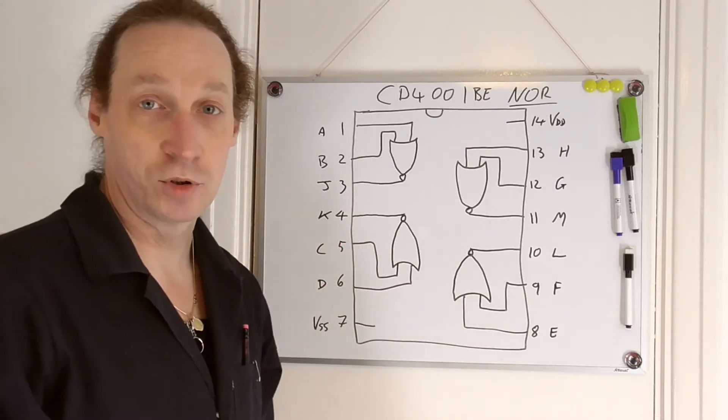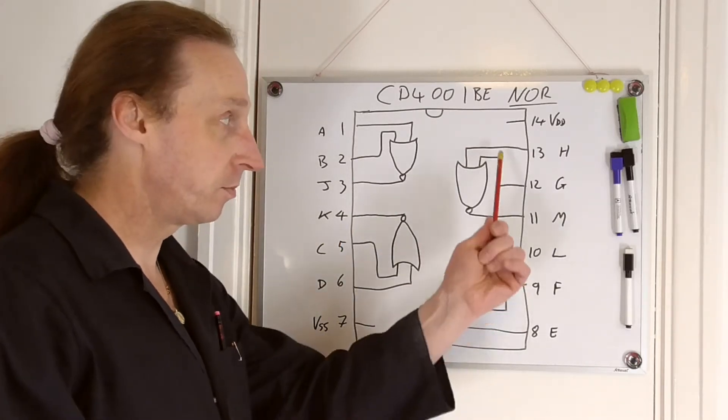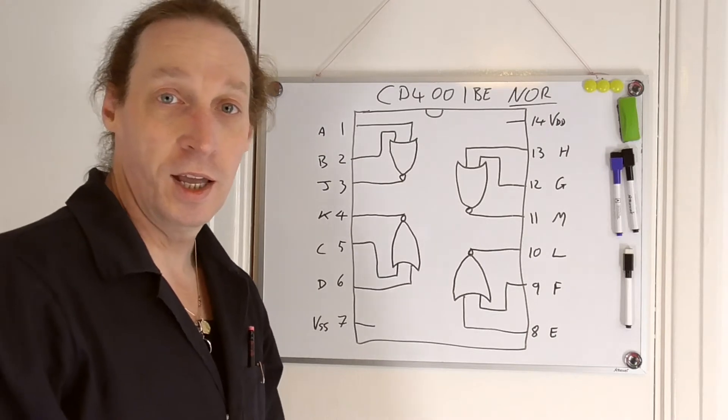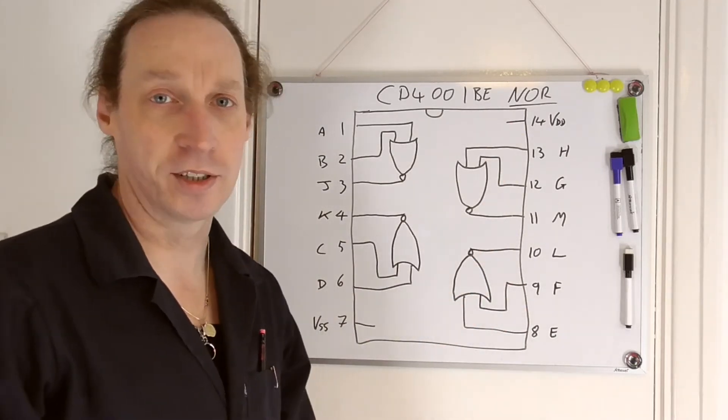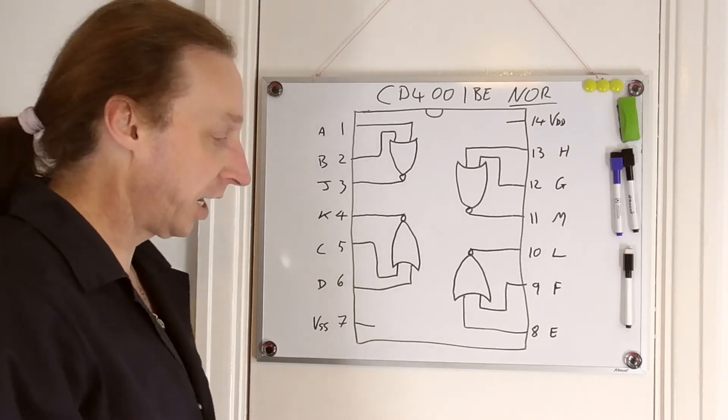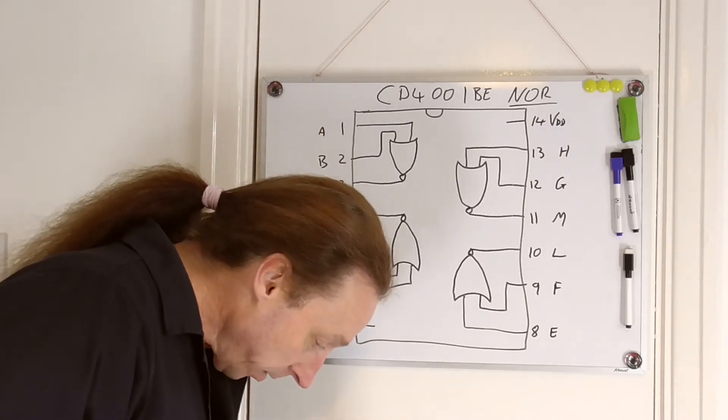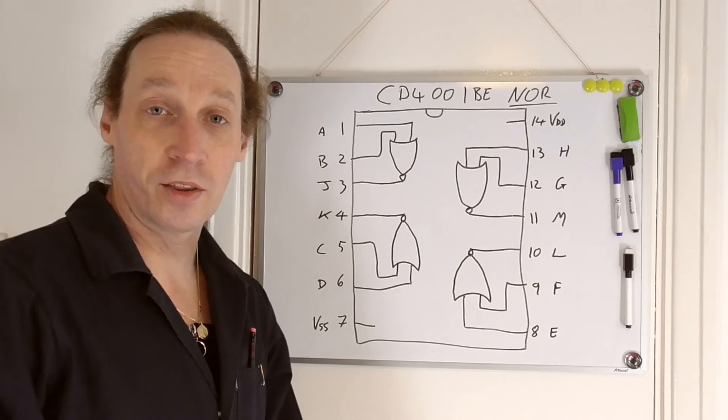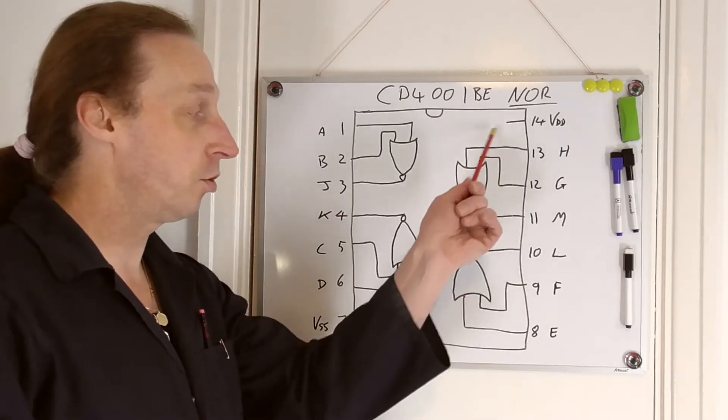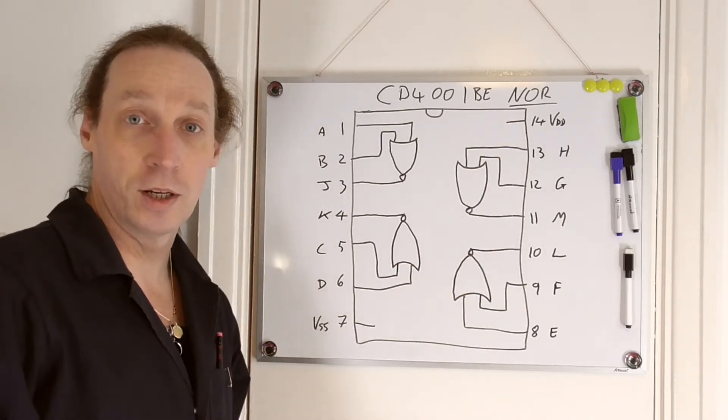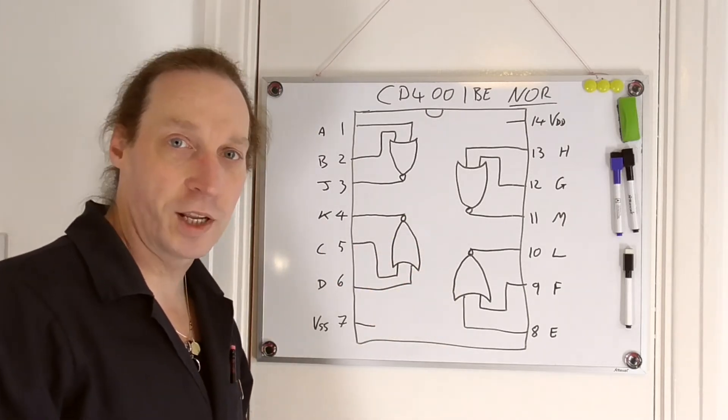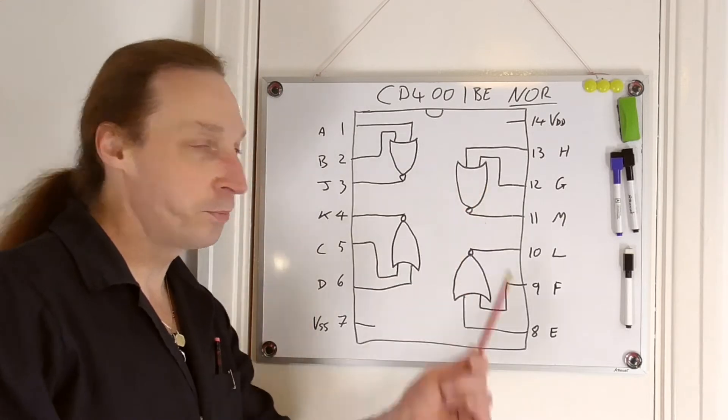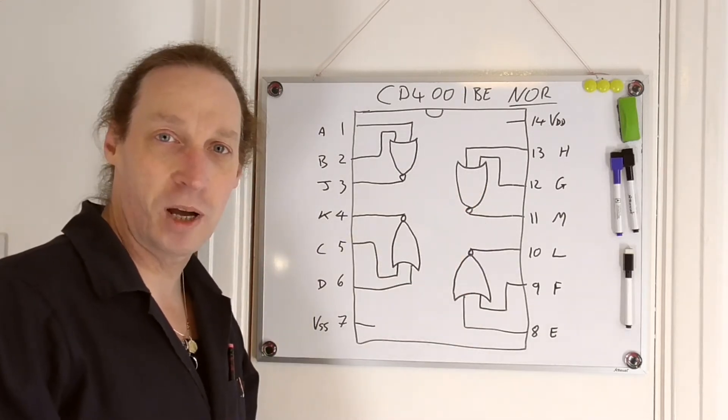Choose which one you want to use and use the appropriate inputs and outputs for that. And obviously you've got to power it. Now with this I believe it takes, let's have a quick look, somewhere between 3 and 18 volts on your power to make this circuit work. Right so shove that in, put it in your circuit and see what happens.